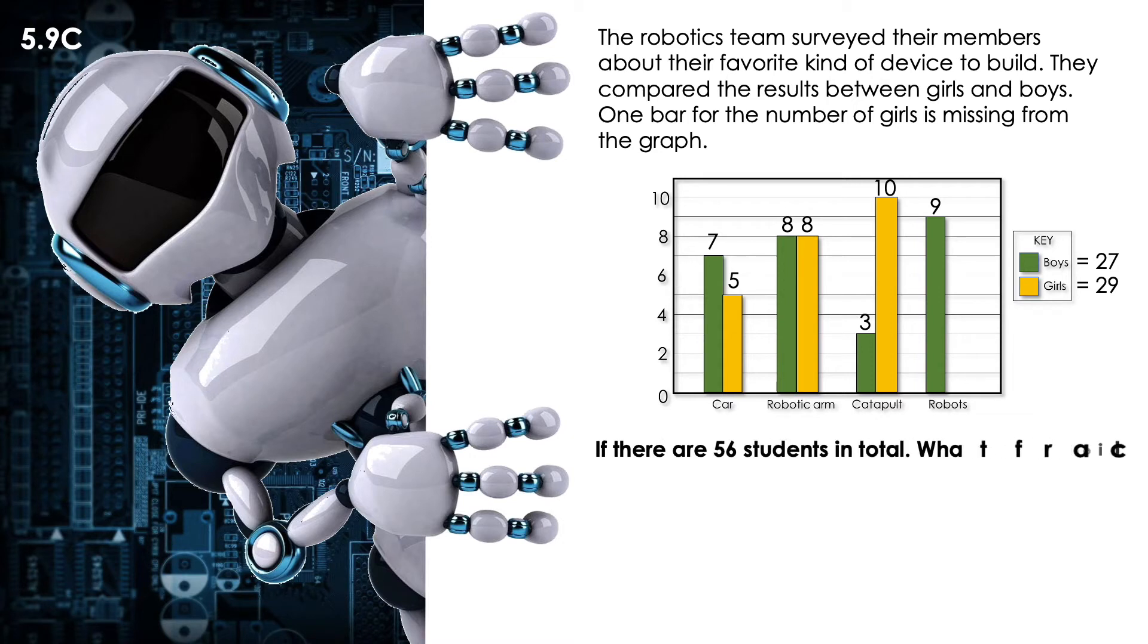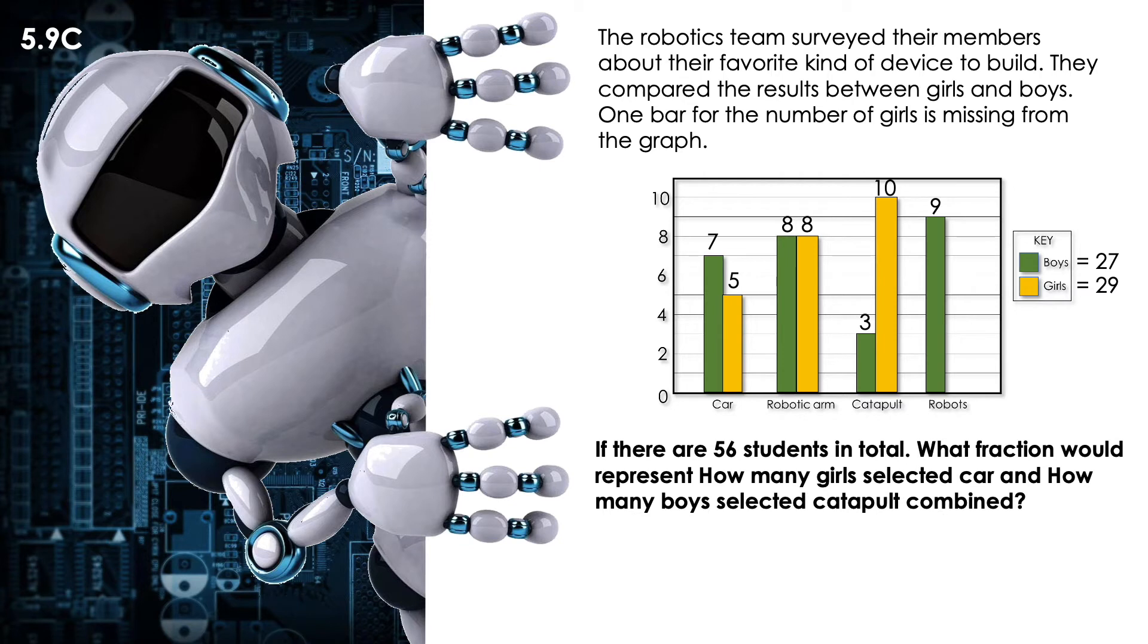If there are 56 students in total, what fraction would represent how many girls selected car and how many boys selected catapult combined? How many girls selected car? Five. And how many boys catapult? Three. If I combine them, five plus three is eight. So that means that my total is 27 plus 29, that equals 56. And my numerator is eight. If we're finding equivalent fractions, my equivalent fraction for eight out of 56 is equal to one out of seven.